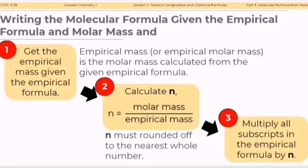Given the empirical formula and molar mass of a compound, here are the steps for determining its molecular formula. Number 1: Get the empirical mass given the empirical formula. Empirical mass, or empirical molar mass, is the molar mass calculated from the given empirical formula. Number 2: Calculate N, where N is the ratio of the molar mass to the empirical mass. N must be rounded off to the nearest whole number.